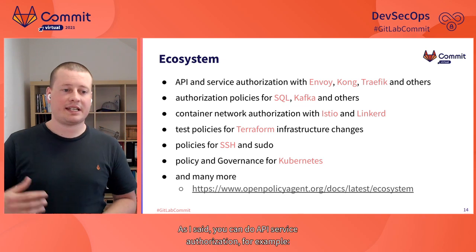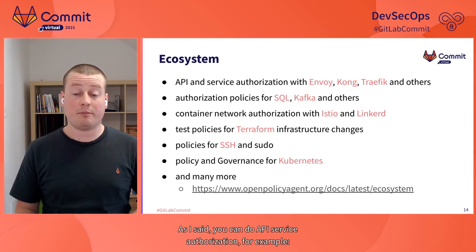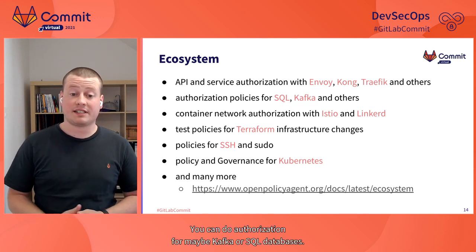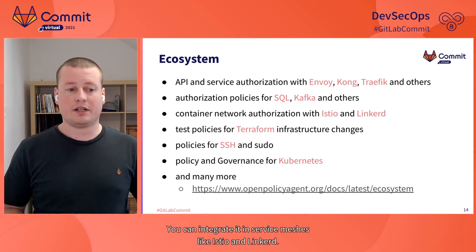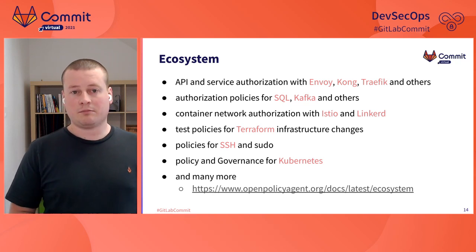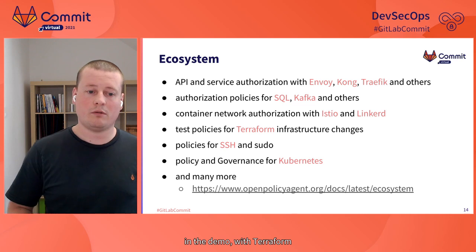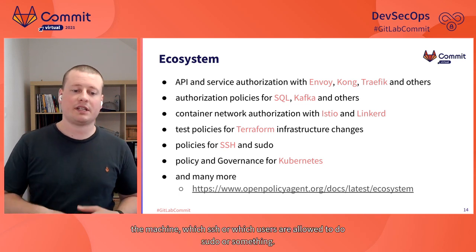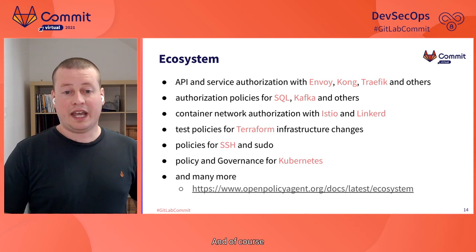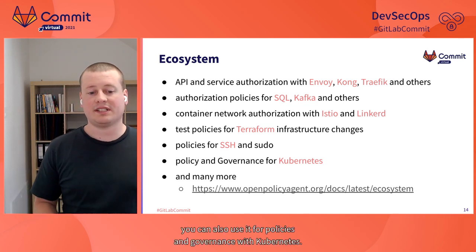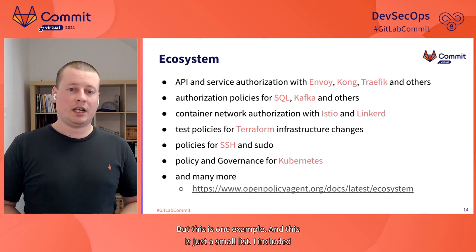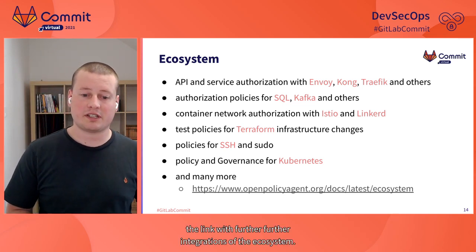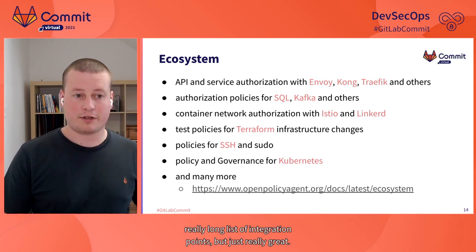More ecosystem details: you can do API service authorization with Envoy, Kong, Traefik, and others. You can do authorization for Kafka or SQL databases, integrate it in service meshes like Istio or Linkerd, use it for infrastructure as code changes — which we'll do in the demo with Terraform — or for Linux machines to control SSH access or sudo permissions. You can also use it for policies and governance with Kubernetes. There's a long list of integration points which is really great.